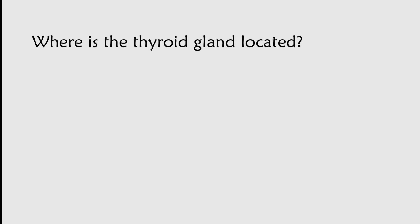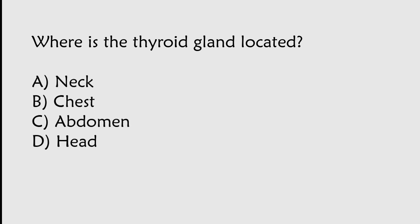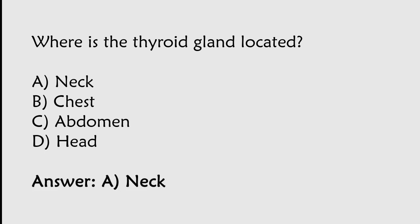Where is the thyroid gland located? Options: Neck, Chest, Abdomen, Head. The correct answer is Option A. The thyroid gland is located in the neck.